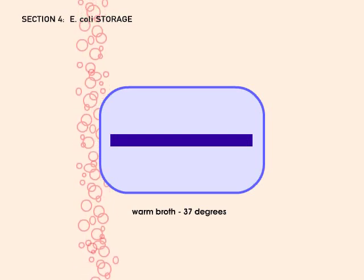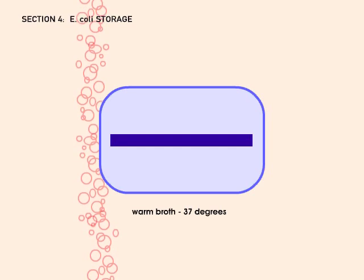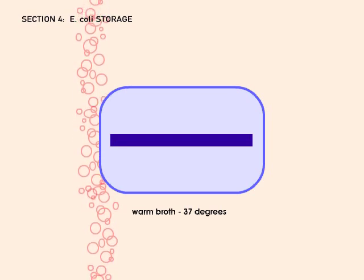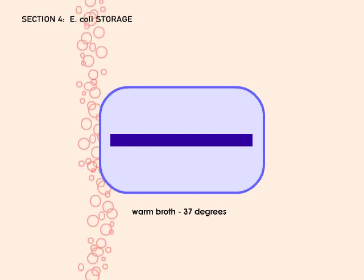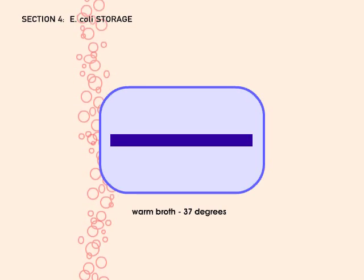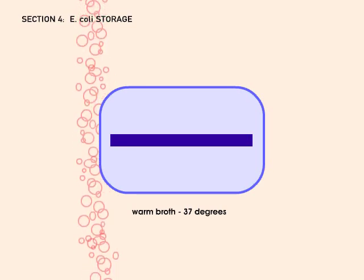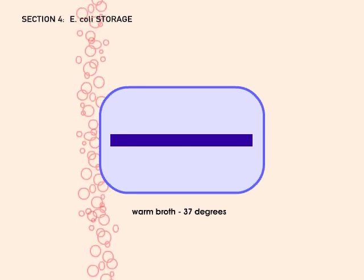The E. coli cells act as copiers, producing many copies of the human DNA sequence that they contain. To prepare to sequence DNA, a clone of cells containing the same bit of human DNA is released into a rich, warm broth.